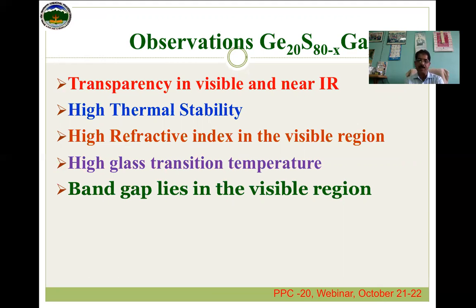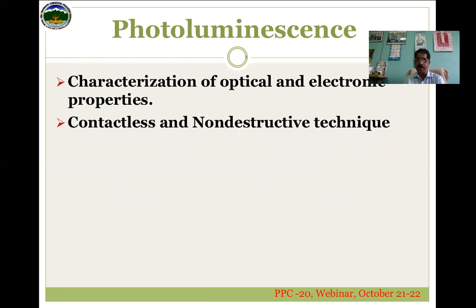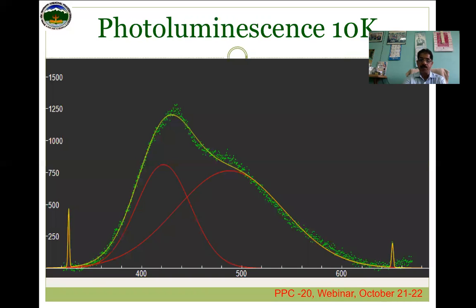What we observe is transparency in the visible and near IR region. These materials are highly thermostable with a high refractive index in the visible region, high glass transition temperature, and the band gap lies in the visible region, making them important for visible-region applications. Photoluminescence measurement has also been done. The characterization of optical properties through photoluminescence provides information about the optical and electronic properties of the material — specifically the band gap and localized defect states inside the gap. That is why photoluminescence is important.